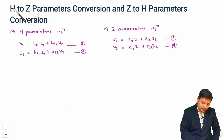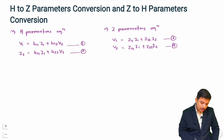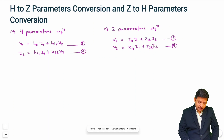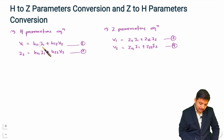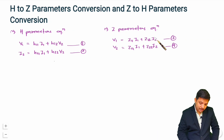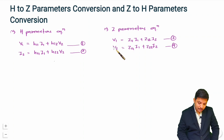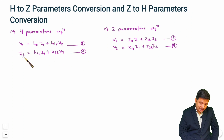Now we want to convert h into z. We need to compare the h-parameter equations in the form of z-parameter equations. If you look carefully, the first equation has v1 in terms of i1 and v2, and equation 3 also has v1 but in terms of i1 and i2 — so we cannot directly compare equations 1 and 3. Instead, we take equation 2, which has i2 in terms of i1 and v2, and rearrange it to get v2 in terms of i1 and i2, so we can compare it with equation 4. Let us take equation 2 first.